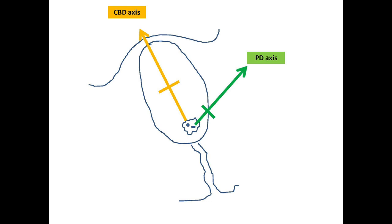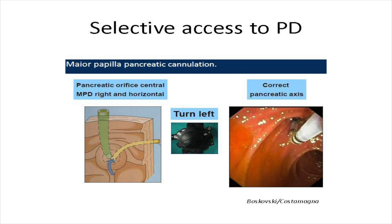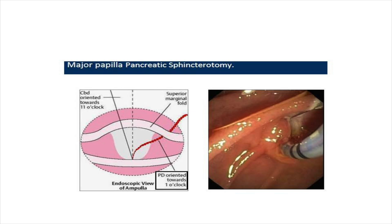This image is from Ivo Boskovsky and Guido Kostamania from the Rome training group, showing the movements necessary to try and access selective cannulation of the pancreatic duct. Again in green and yellow you can see the common bile duct and the pancreatic duct. We need to turn the small left-right wheel left, shorten the scope and adopt a flatter approach to access the pancreatic duct. This also shows the orientation of the common bile duct towards the 11 o'clock position, the position of the superior marginal fold, and in red the position of the pancreatic duct. On the right panel you can see successful pancreatic duct cannulation and the start of a pancreatic sphincterotomy.